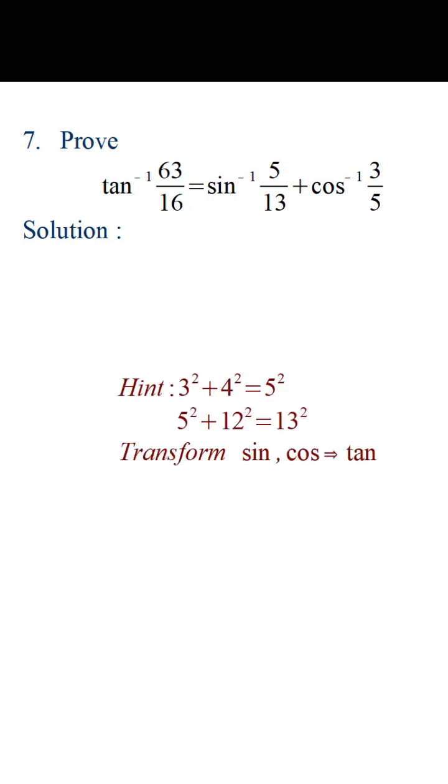The right hand side is a summation of angles and the left hand side is tan. So we can think about applying tan of summation of angles here. Also note that 5 by 13 and 3 by 5 form Pythagorean triplets.